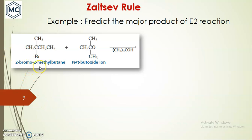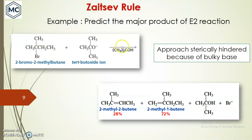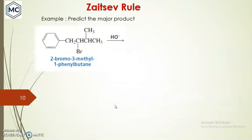Another example: 2-methylbutane with tert-butoxide, a bulky base. The hydrogen leading to the more substituted product is a secondary hydrogen adjacent to a bulky group, so the base cannot easily access it. The primary hydrogen is more exposed, so the less substituted product becomes the major product. When using a bulky base, the less substituted product is favored.